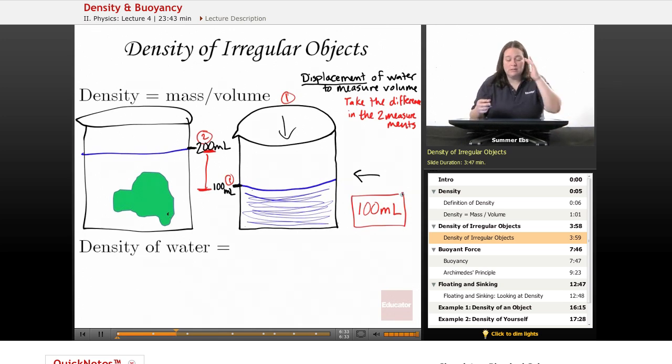All we have to do is put that object on a scale. So it measures 200 grams. Divide that by your volume, 100 milliliters.